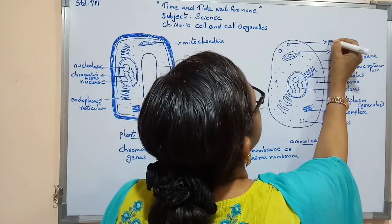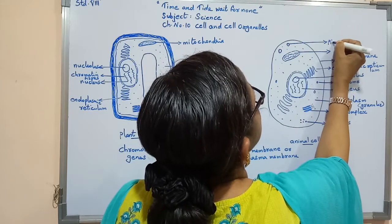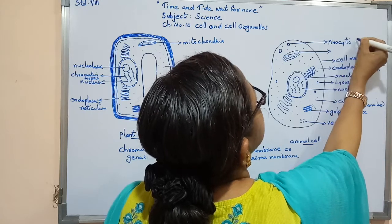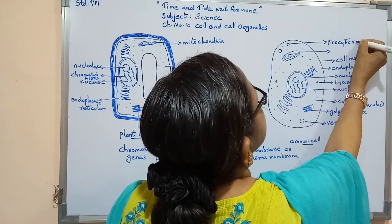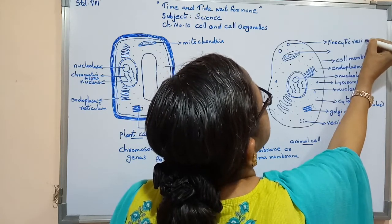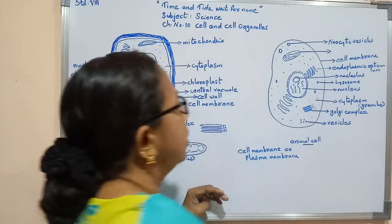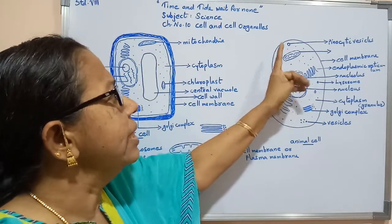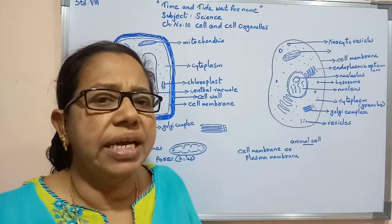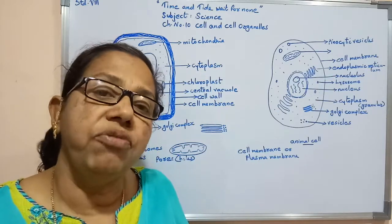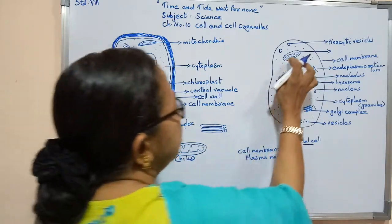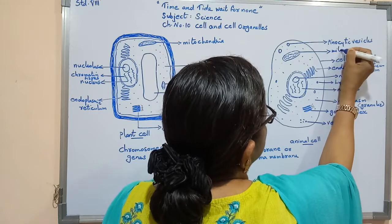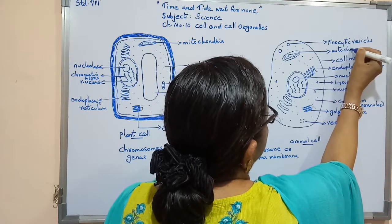Bags that can be seen near the cell membrane are known as pinocytic vesicles. There are a number of them present. Also present is the mitochondria.